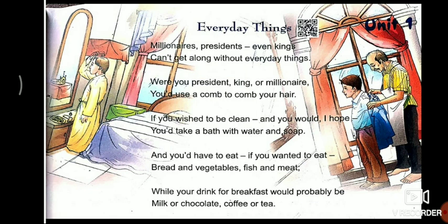Millionaires, presidents, even kings can't get along without everyday things. Were you president, king or millionaire, you would use a comb to comb your hair. If you wished to be clean — and you would, I hope — you would take a bath with water and soap. And you would have to eat, if you wanted to eat: bread and vegetables, fish and meat. While your drink for breakfast would probably be milk or chocolate, coffee or tea.